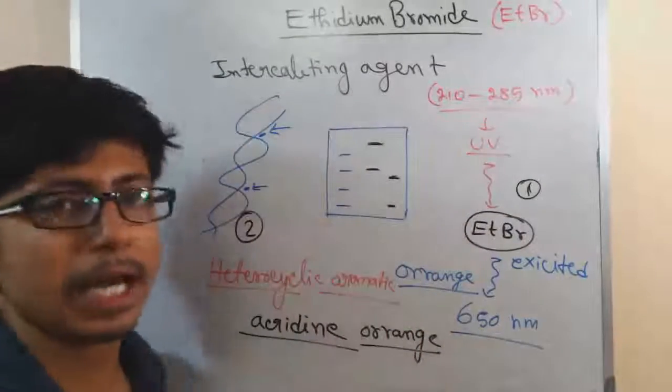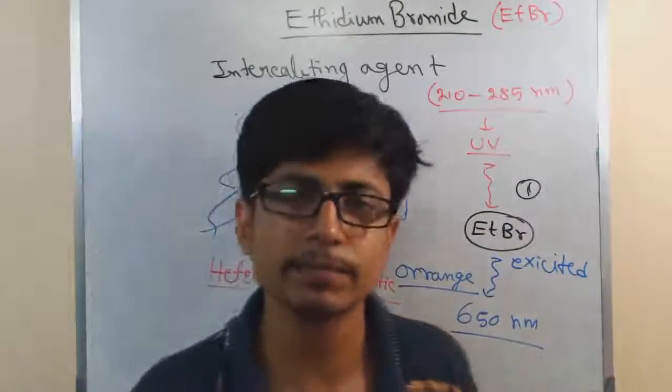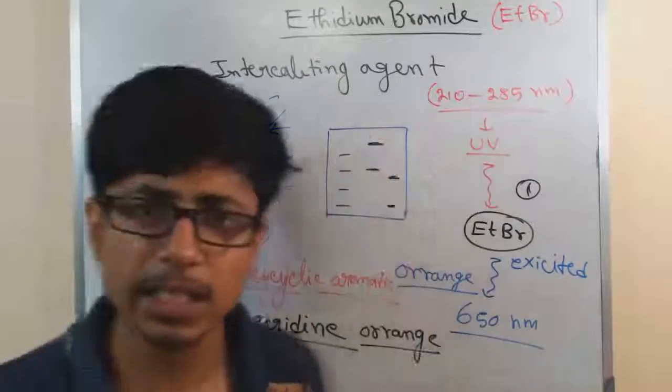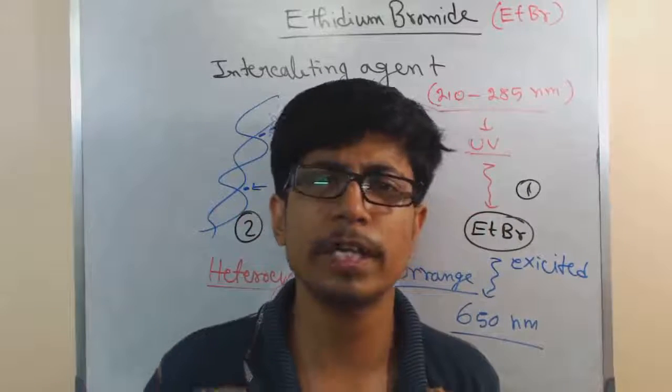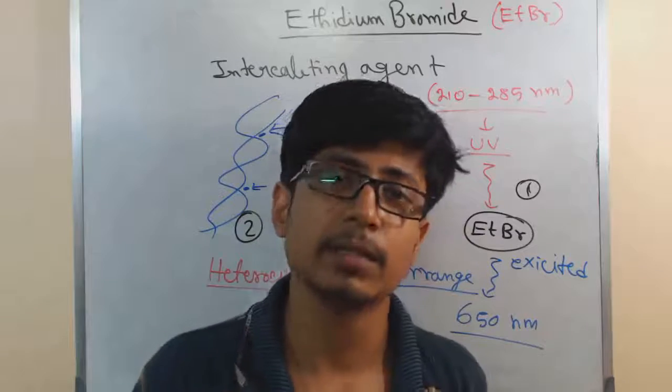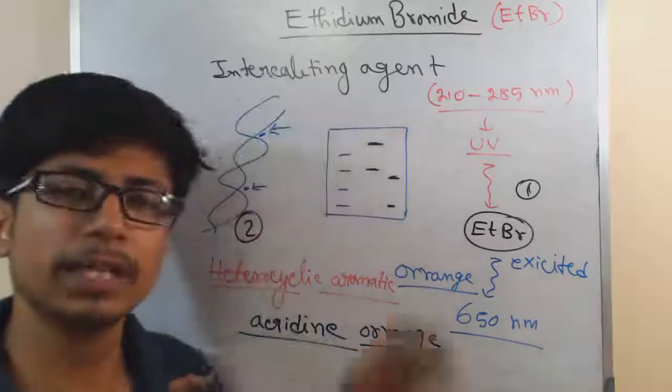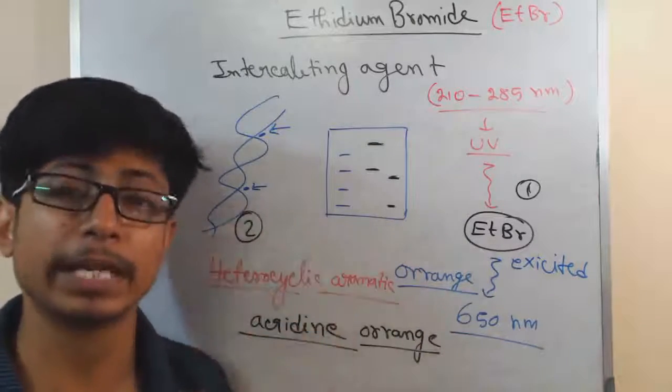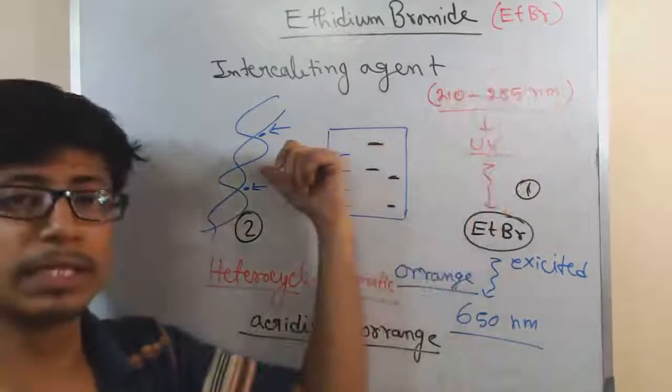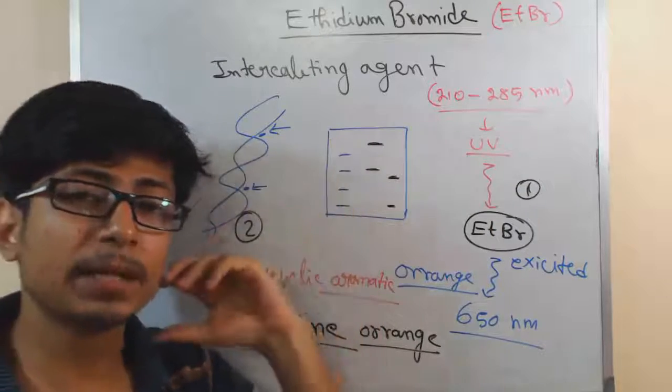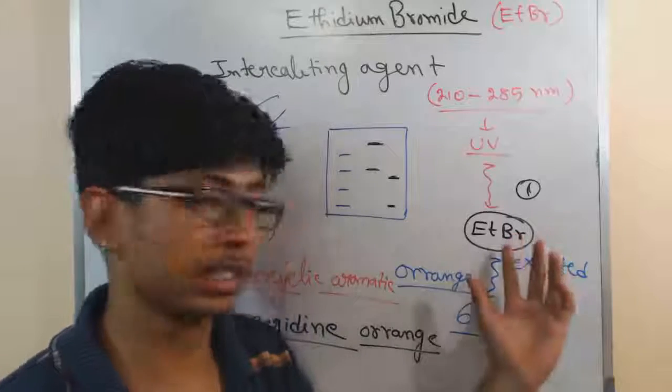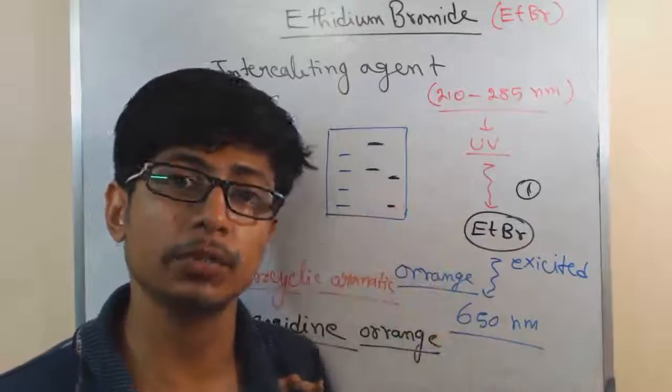But still nowadays, we still use ETBR in most of the labs here in India to visualize the place of DNA because the expense is less and also it is very easy. Just put a small amount of it while you are preparing the gel mix, the loading mixture for the DNA, and then after the process is simply exposed to UV, you will get it.